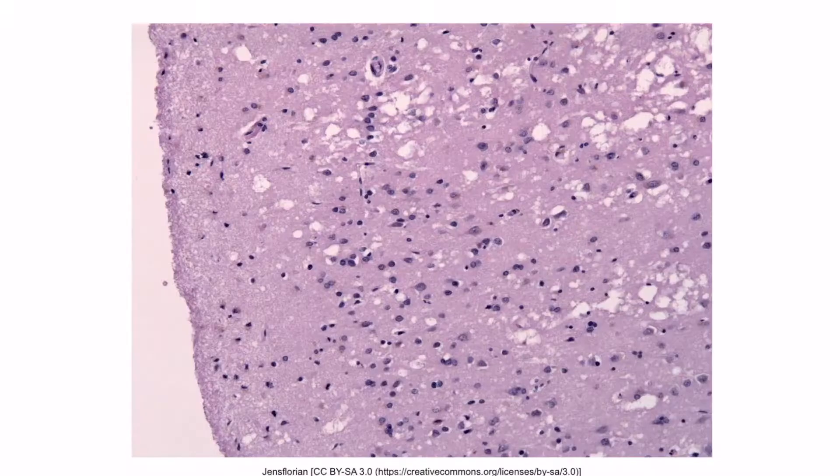This is a histological image from a brain biopsy in a patient with prion disease, or spongiform encephalopathy. As you can see, there are vacuoles scattered throughout. These vacuolations give the appearance of holes, much like the holes of a sponge.